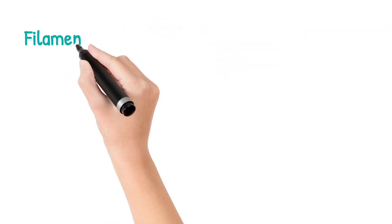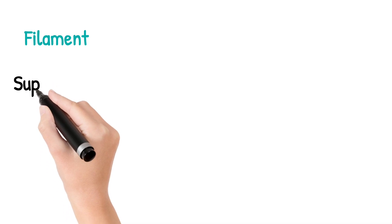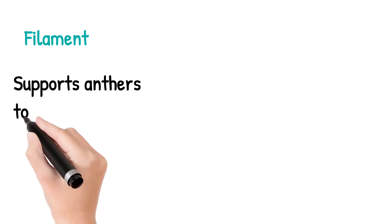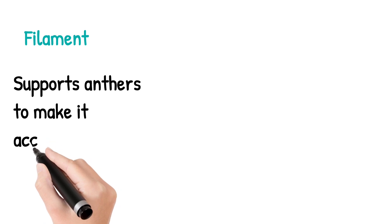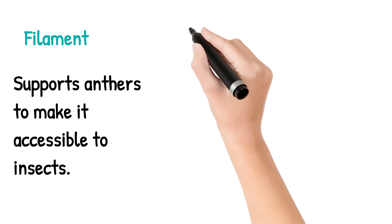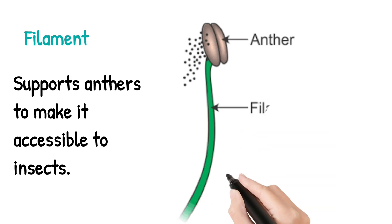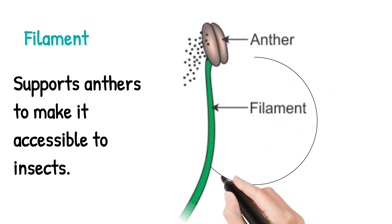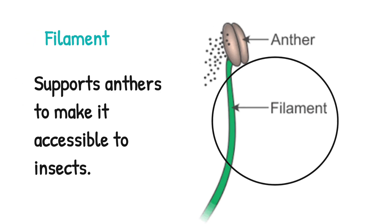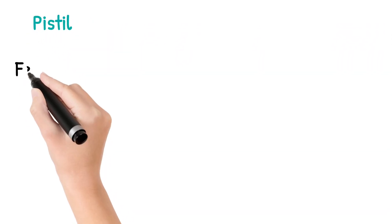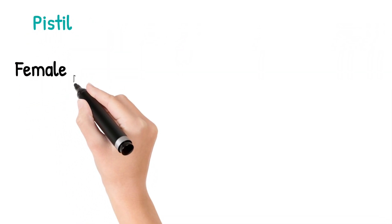The filament helps to support the anther to make it accessible to insects. You can see the picture — the filament is situated below the anther, which helps to support it.